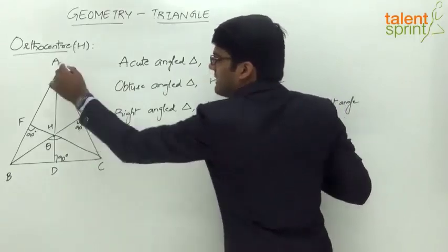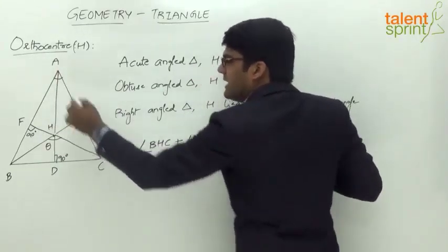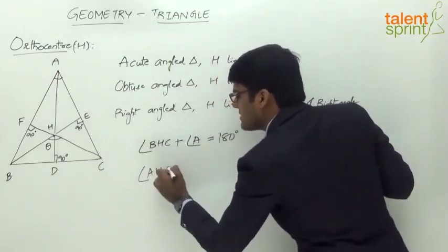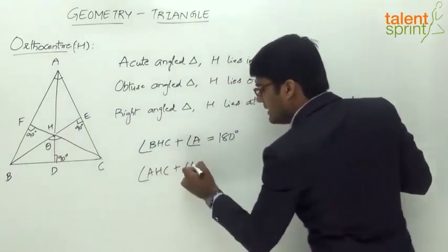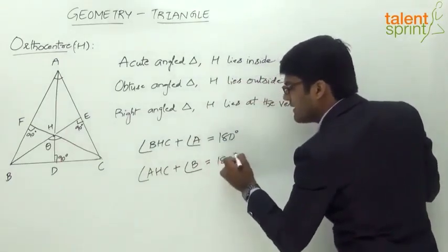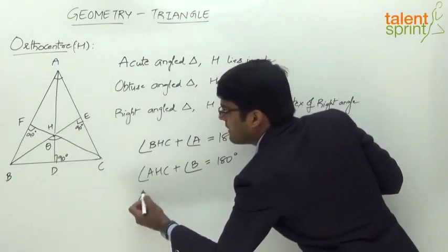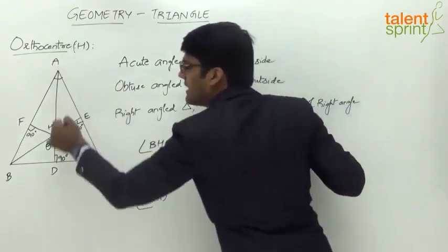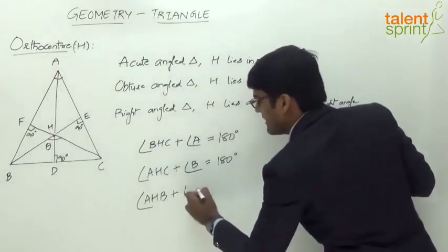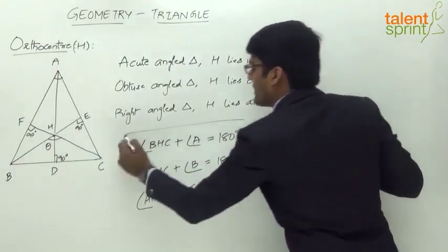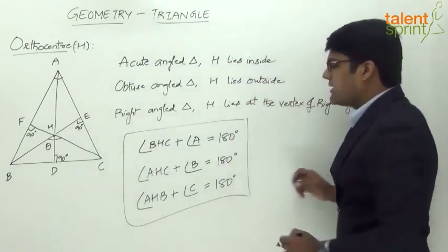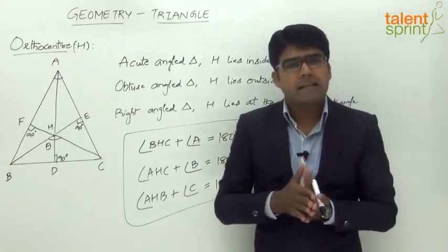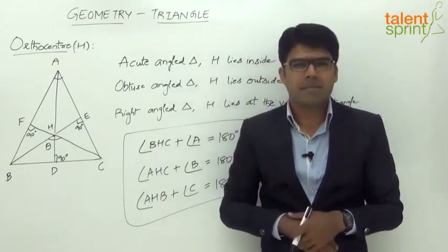For side AC, angle AHC plus angle B equals 180 degrees. For the third side, angle AHB plus angle C equals 180 degrees. The key point to remember is that the angle made by any side with the orthocenter and the vertical opposite angle are supplementary, adding up to 180 degrees.